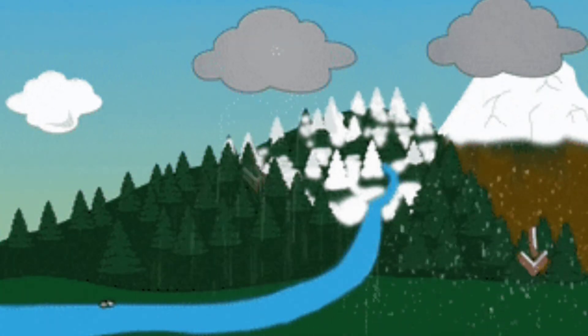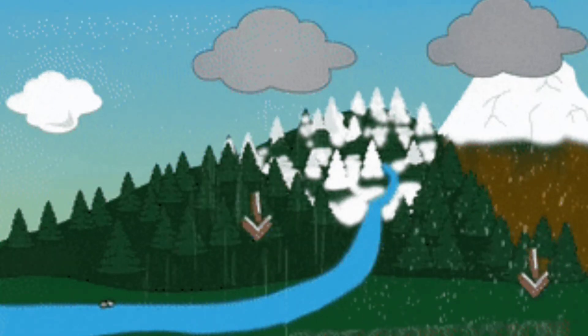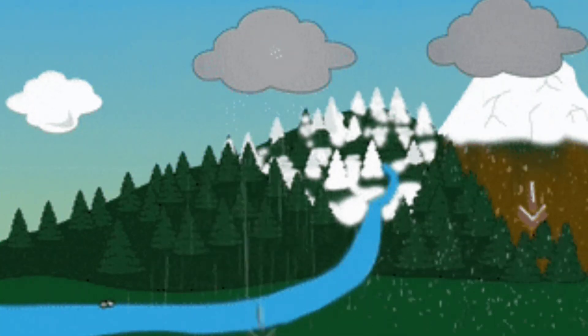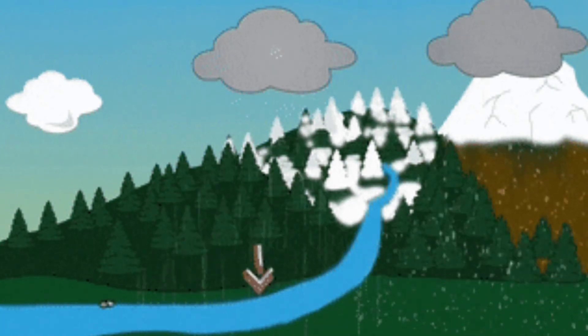When the clouds become heavy with drops of water, water falls as rain. Rainwater flows into lakes, rivers, and seas.